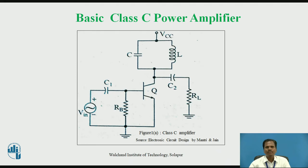This leaves only the dynamic load resistance in the collector circuit of the power transistor. The efficiency of this Class C power amplifier is approximately 90%, and due to these reasons, Class C power amplifier is used as a power output stage.